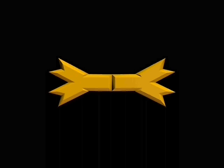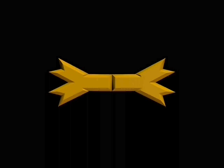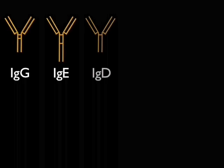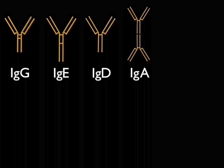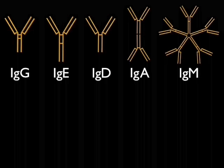Antibodies, or immunoglobulins, can be subdivided into different classes according to their structure. There are five classes, called IgG, IgE, IgD, IgA, and IgM, each having different functions.